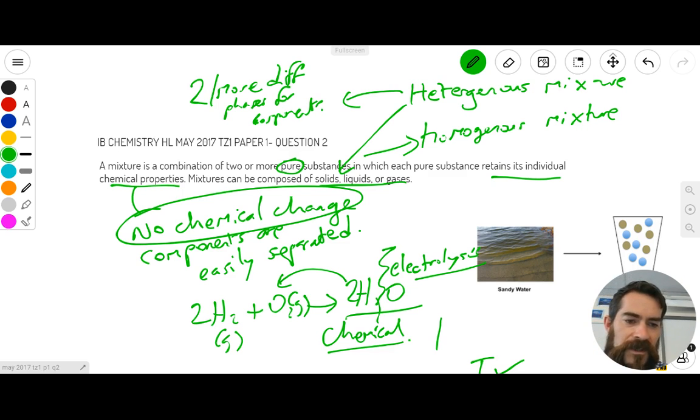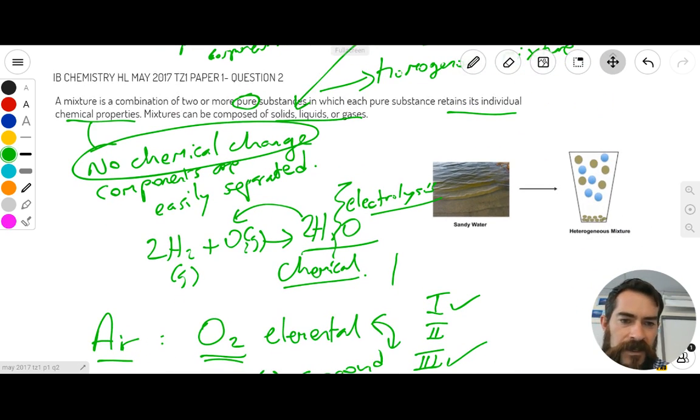So for example, you could have, in this picture I just chose here for you, you have sandy water. And in sandy water you're going to have solid sand here sitting within the liquid water. So you have a solid plus a liquid, but they're mixed together. So this is what you would describe as a heterogeneous mixture.